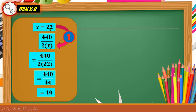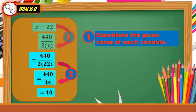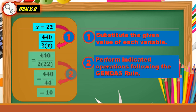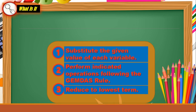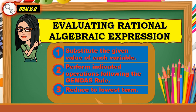For example, the value of X is 22. We substitute 22 to X, which gives 440 over 2 times 22. Performing the indicated operation — multiplication first: 2 times 22 is 44. Then 440 divided by 44 is division. With grouping symbols, operations within the grouping symbols must be performed first. The general steps are: first, substitute the given value of each variable; second, perform indicated operations following the GEMDAS rule — Groupings, Exponents, Multiplication and Division, Addition and Subtraction; and third, reduce to lowest term.